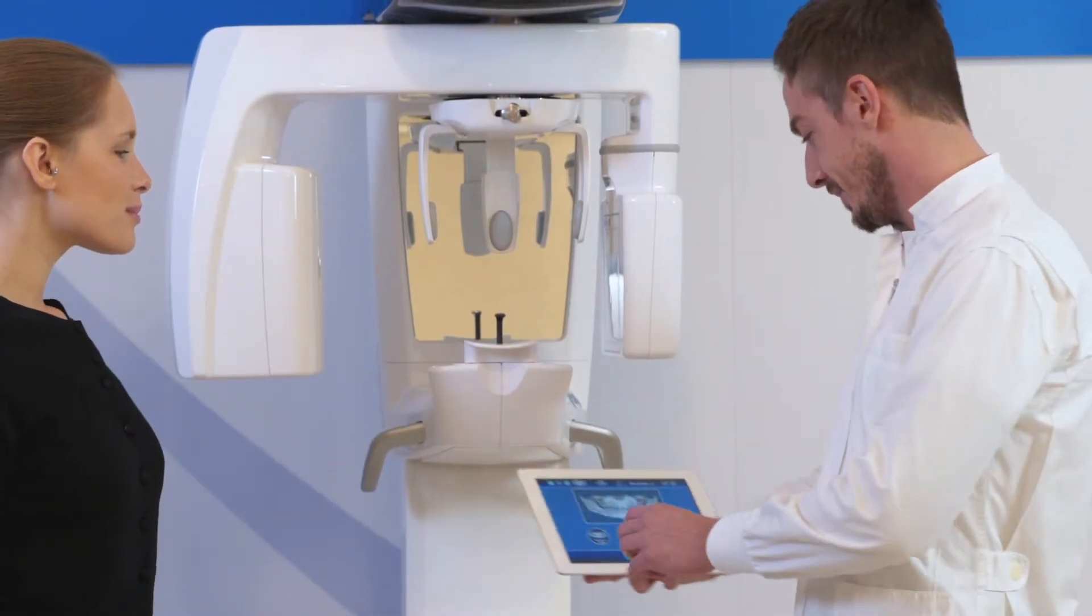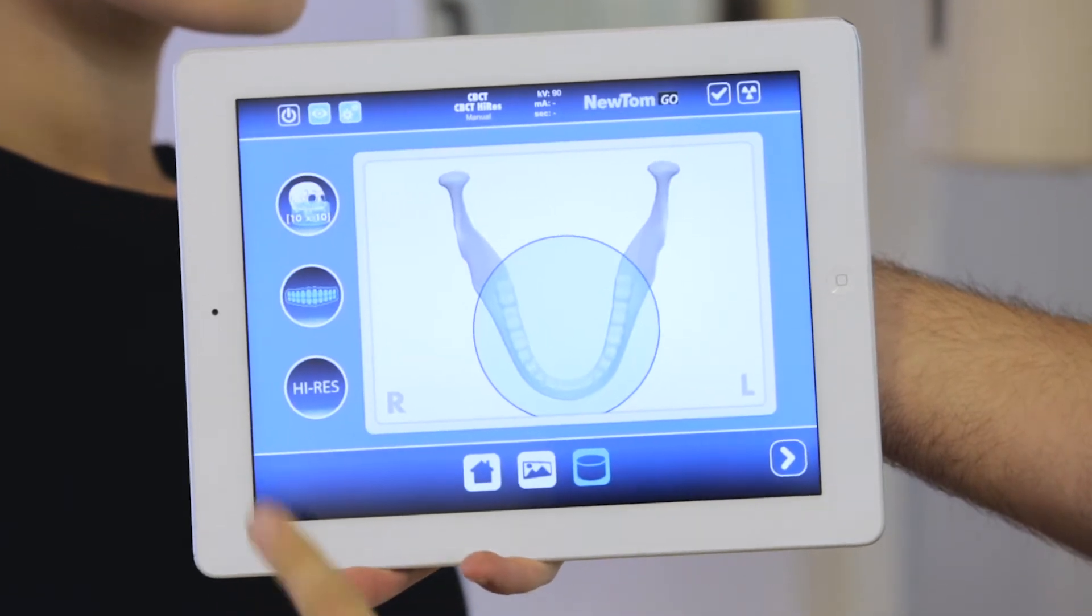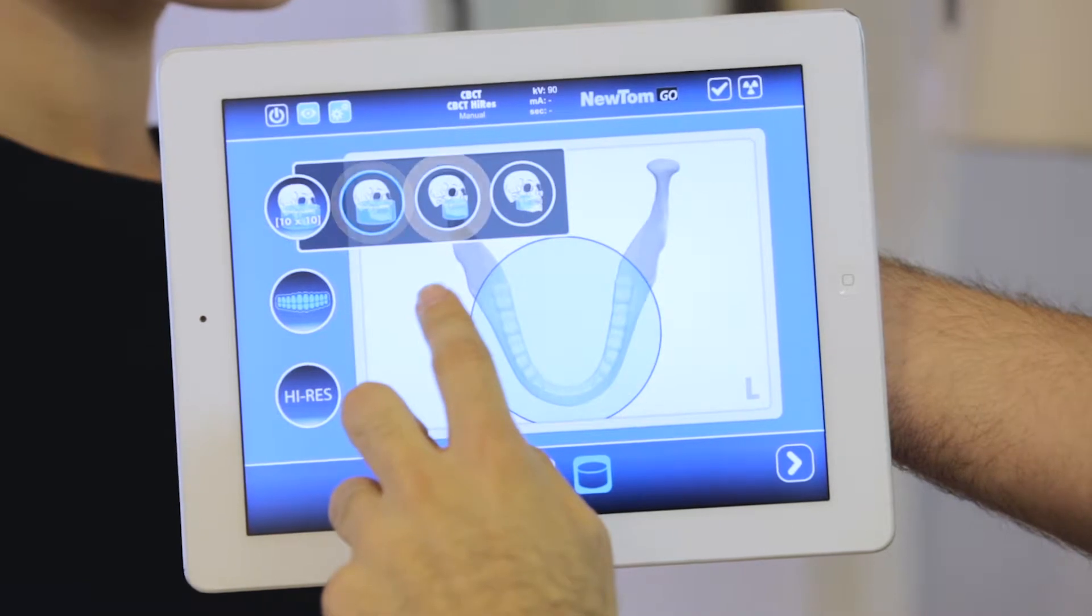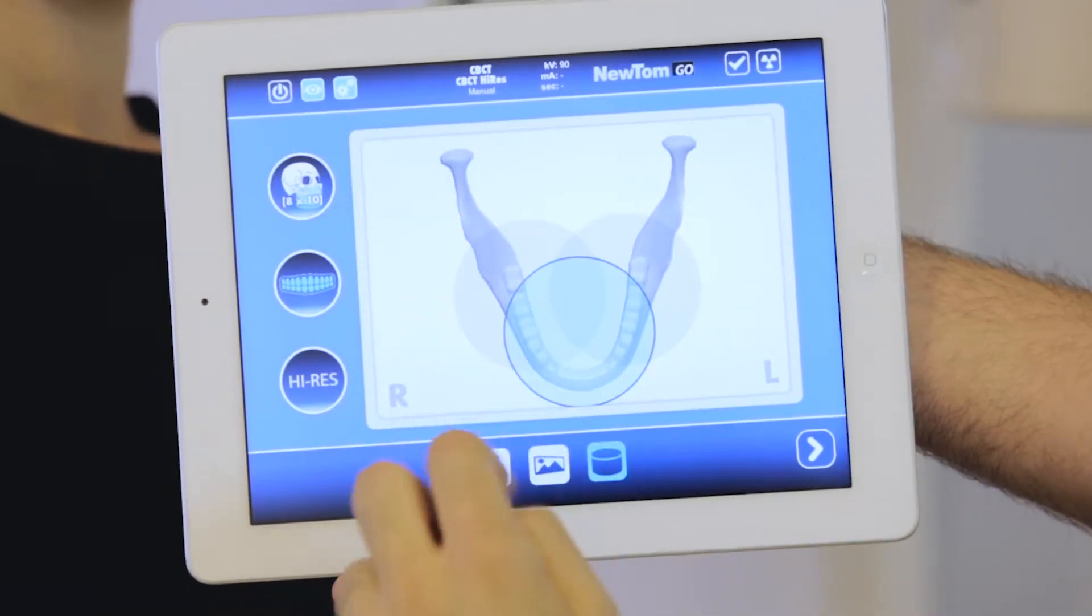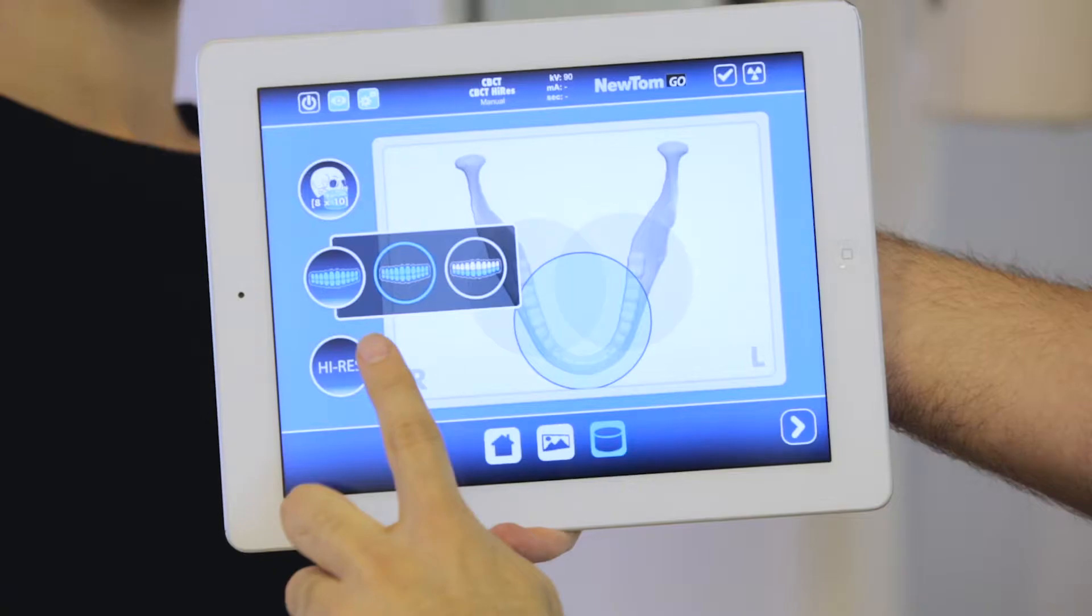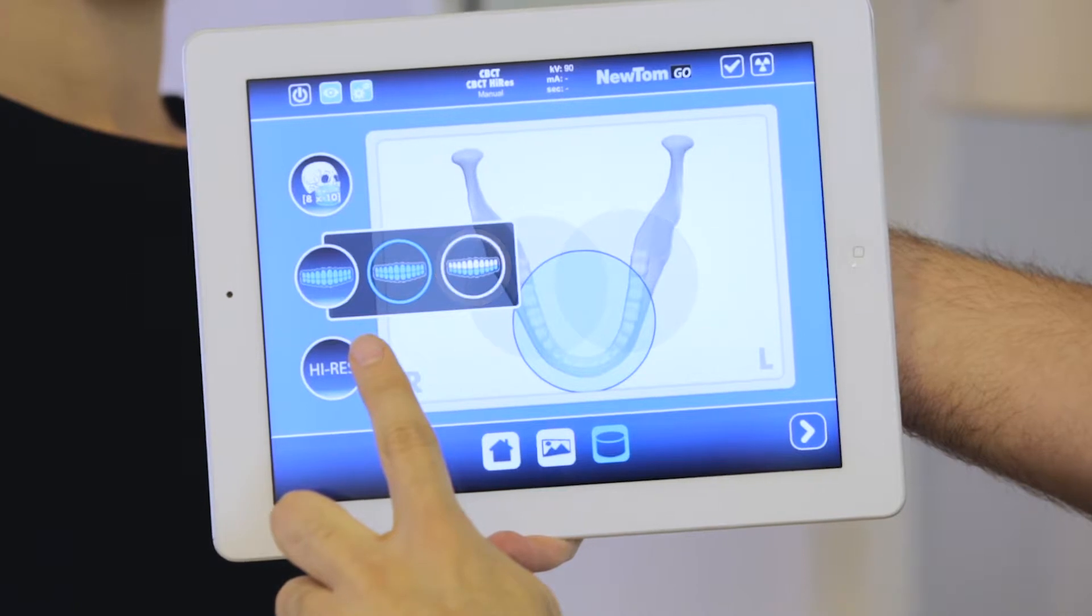Accessing the 3D section, he will find a screen showing the CBCT program. Via the special icon, the dentist selects the size of the field of view from the list. He defines the center of volumetric reconstruction by selecting on the screen the anatomical region of interest.